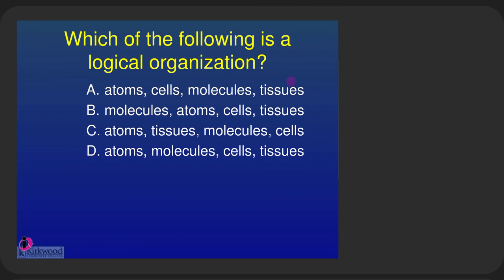Practice question: which is the correct logical organization? Atoms don't go directly to cells — molecules come before cells, and atoms come before molecules, so the correct answer is atoms → molecules → cells → tissues. A group of similar cells that perform the same function is classified as a tissue.